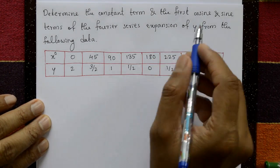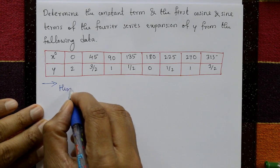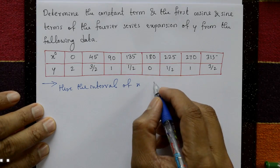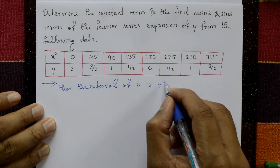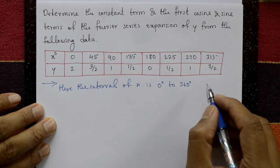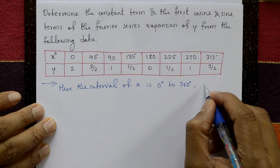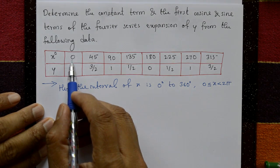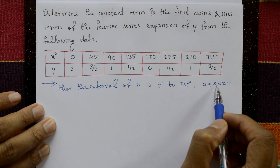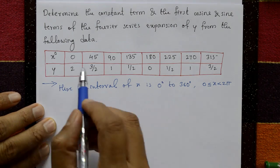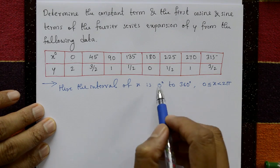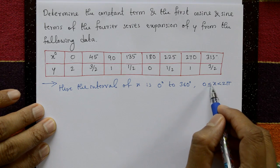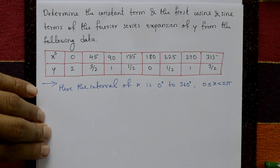Find the first cosine and sine terms and constant term. The interval of x is 0 degrees to 360 degrees, that means 0 ≤ x < 2π. The last given x value is 315 degrees, which is below 360 degrees, confirming x is less than 2π.